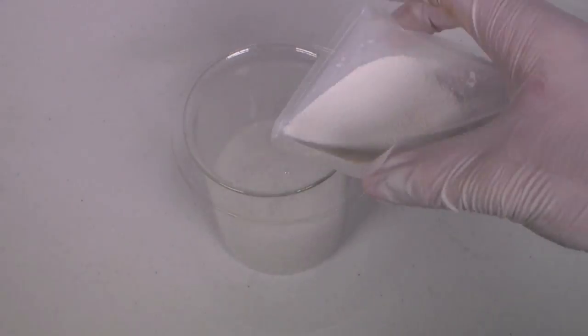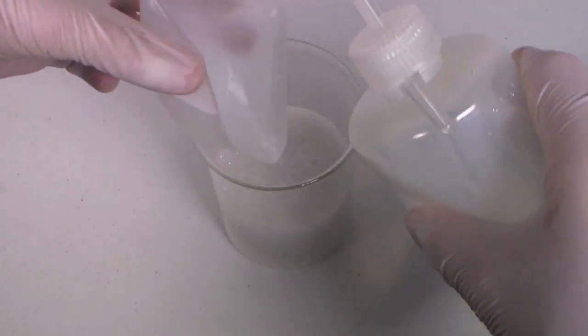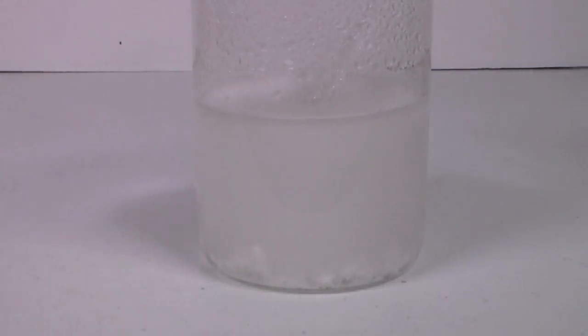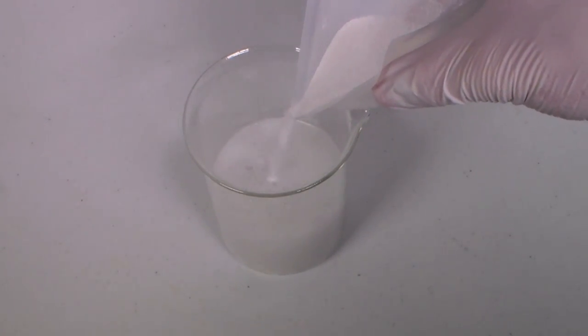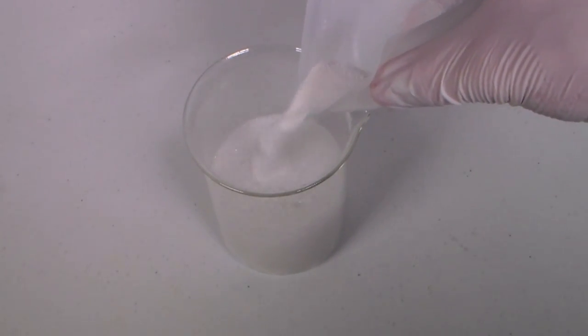Carbon dioxide gas will be released, and Aluminum Oxide will precipitate out as a gelatinous solid. We are using an excess of sodium carbonate to ensure that all of the Aluminum Chloride reacts.